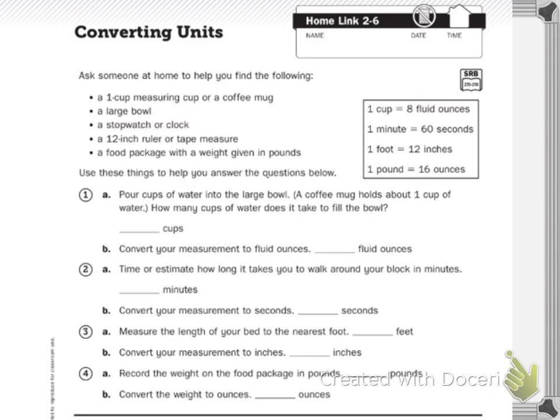Multi-step problems are problems that have more than one step. It says ask someone at home to help you find the following items: a one-cup measuring cup or a coffee mug, a large bowl, a stopwatch or a clock, a 12-inch ruler or a measuring tape, and a food package with a weight given in pounds. Now if you don't have those things, maybe look something up on the internet or use what you have at home.